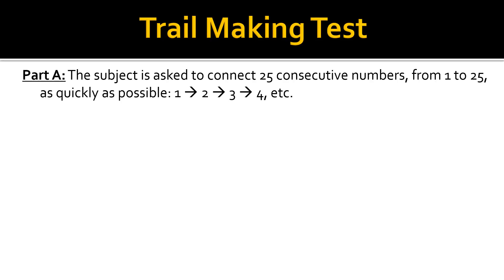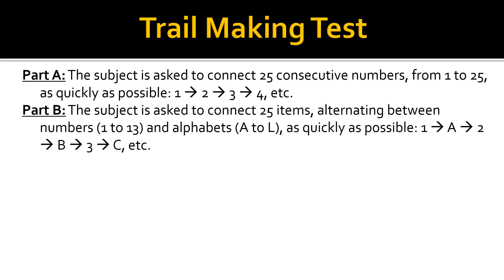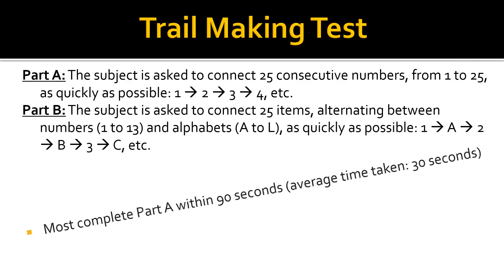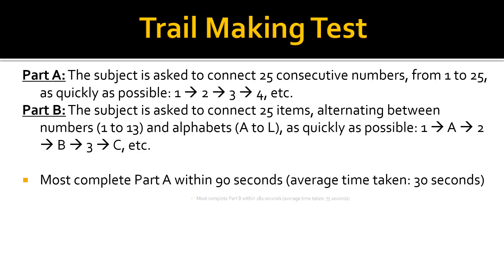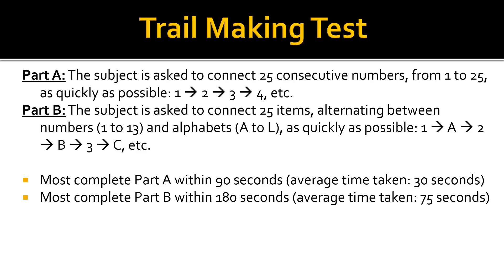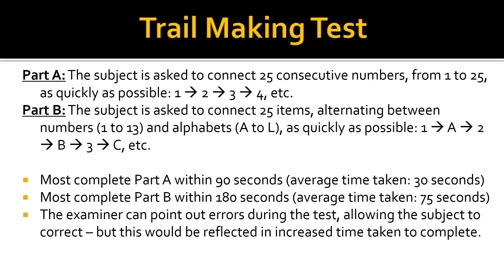In the trail making test part A, the subject is asked to connect 25 consecutive numbers from 1 to 25 as quickly as possible. In part B, the subject is asked to connect 25 items alternating between 13 numbers (1 to 13) and 12 alphabets (A to L). Most complete part A within 90 seconds, while most complete part B within 180 seconds.